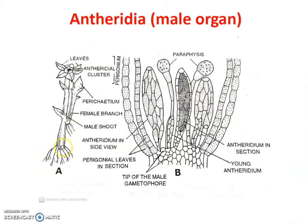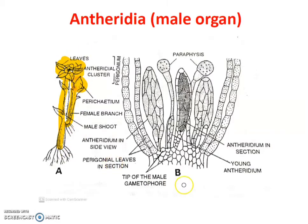Funaria plant is monoecious, meaning on the single plant there are male and female sex organs developed. In this plant there are two separate branches developed. On the main branches, male sex organs are developed at the tip of the branch. The tip of the branch is covered by a crown-like structure, and this crown-like structure is made by leaves, covered by spirally coiled leaves. A side branch develops female sex organs, archegonia, and here male sex organs, antheridia.